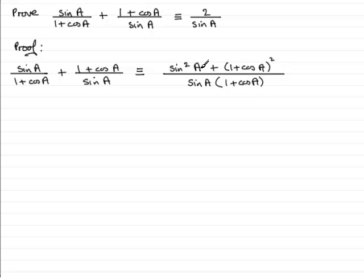Now where do we go from here? Well, I noticed that I've got my sin A already on the bottom here, so I'm going to leave that alone. I've got the 1 plus cos A. I'm not going to do anything with that. I'm not going to expand this bracket. So what I'm going to do is just tidy up the top.